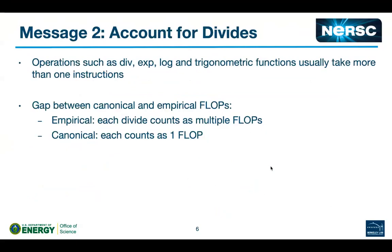Message two is about complex instructions. Additions and multiplications are each counted as one flop, but operations like divides, exponentials, and logarithms are implemented by multiple instructions — it's not fair to count them as one flop. Two comparisons are made: the canonical way of counting flops versus the empirical way. The example used is the GPP kernel from BerkeleyGW, a material science code.